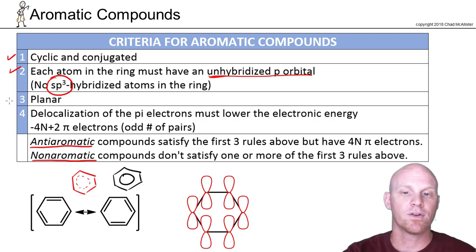Next rule, for there to be delocalization all the way around and sideways overlap of all these p orbitals, it's got to be able to adopt a planar structure. If it's not planar, you don't get that sideways overlap, you don't get that delocalization. So it's also got to be able to have a planar structure.